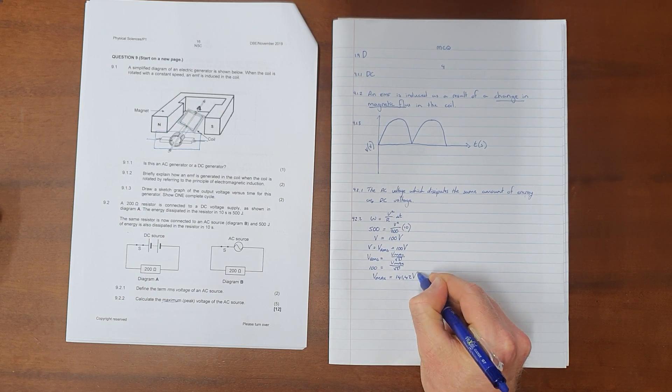the formula V_RMS equals V_max over root 2. This formula is given in the formula sheet. Substituting the values we have, RMS is 100 and V_max is our unknown over root 2. We find that the maximum voltage this AC source provides is 141.42 volts. We're able to do